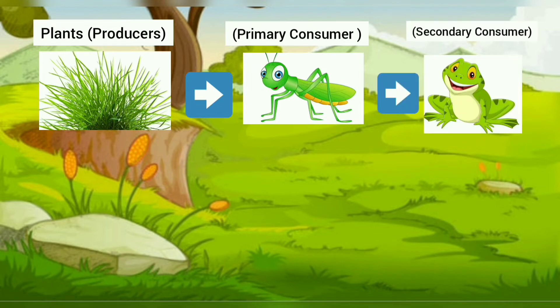The secondary consumer can be omnivores, the ones who eat both plants and animals, or carnivores who eat animals only, like the frog.